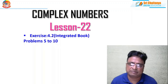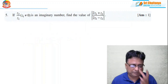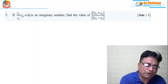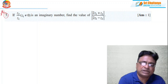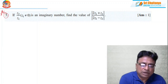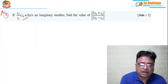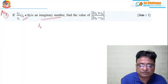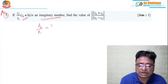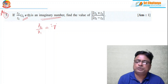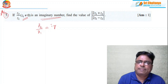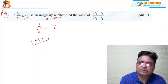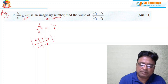In continuation of lesson 21, this lesson 22 covers problems 5 to 10 of exercise 4.2 on complex numbers. Problem 5: if z2 by z1 is an imaginary number, find the value of (2z1 + z2) by (2z1 - z2). This kind of model is very important for board examinations as well as competitive examinations. The key point is that the denominator is not equal to zero, and z2 by z1 is given as purely imaginary, so I take it as iy.